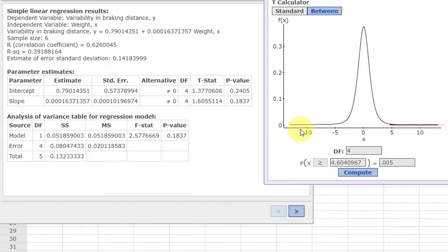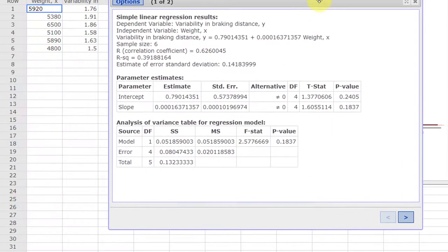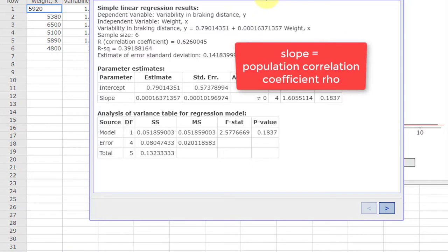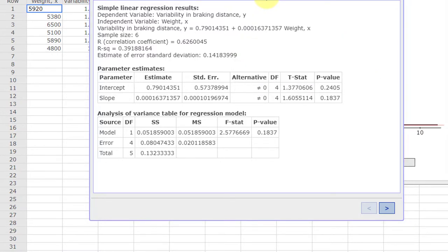Therefore we would conclude that the claim that there is a statistically significant slope rho in the population cannot be supported. We would fail to reject the null.